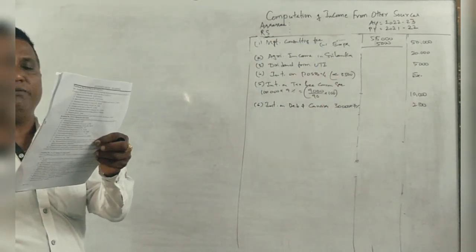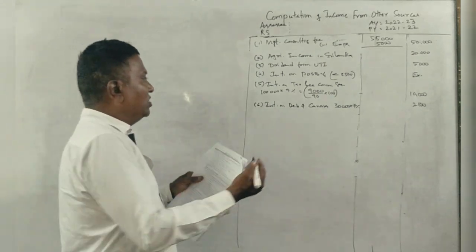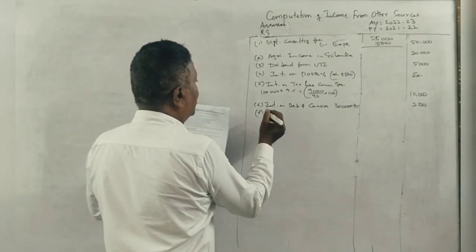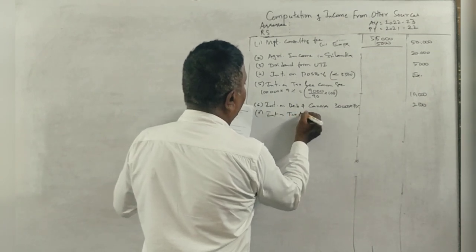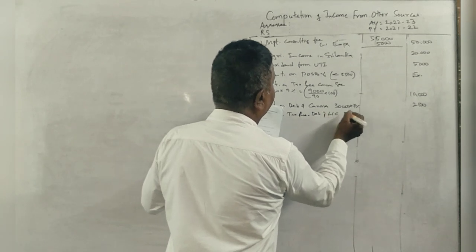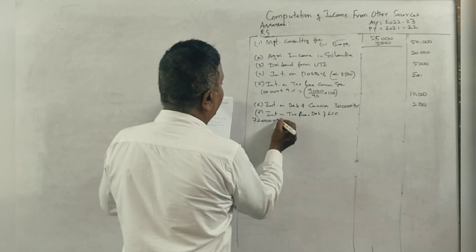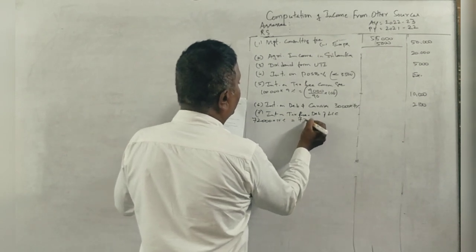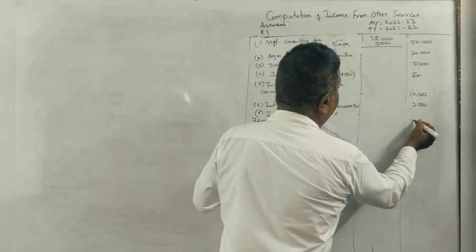Rs. 72,000, 10% tax-free debentures of LIC. Tax-free but non-government tax. LIC is government. Interest on tax-free debentures of LIC: Rs. 72,000 into 10% is Rs. 7,200 divided by 90 into 100 is Rs. 8,000.